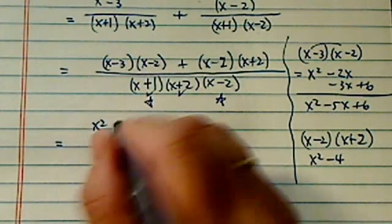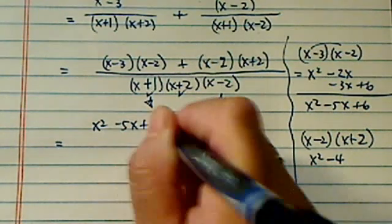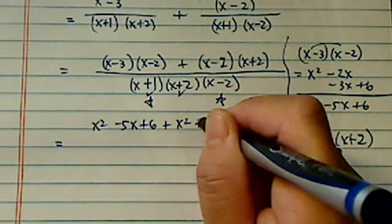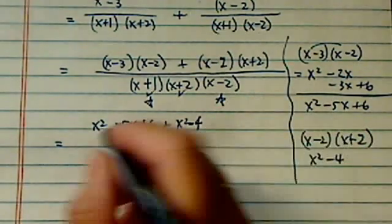So let's combine it over there. I have x squared minus 5x plus 6, and then plus x squared minus 4, actually.